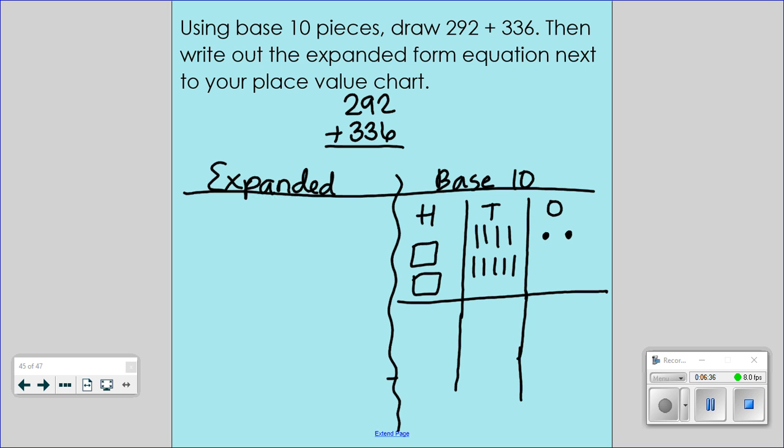Go ahead and build 336 underneath. Now we're going to go on the left side and set it up using expanded form. So I'm going to write out 292 in expanded form. 200 plus 90 plus 2.